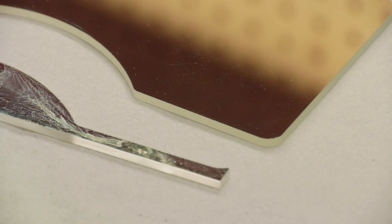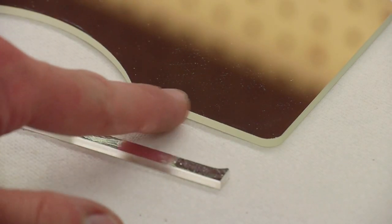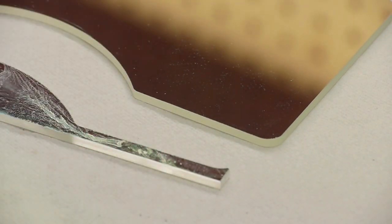As you can see, the edge finish is really quite nice. It's not sharp to the touch like it would be after scoring and breaking, and you can round off the corners like that quite nicely. There's no chipping on the reflective surface. This is a first surface mirror.